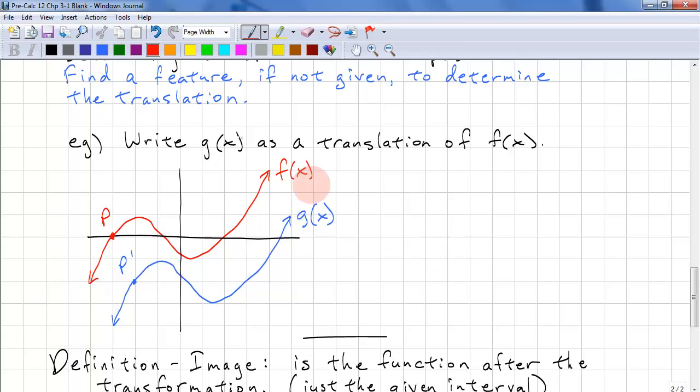We're given p. So h equals p x prime minus p x. This symbol is pronounced prime. Negative 2 minus negative 3 equals 1.